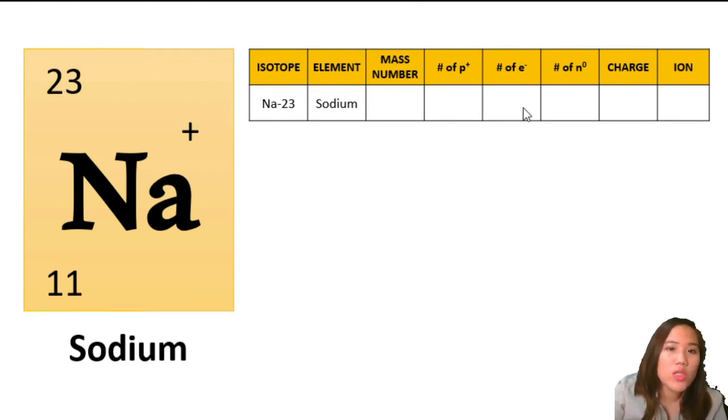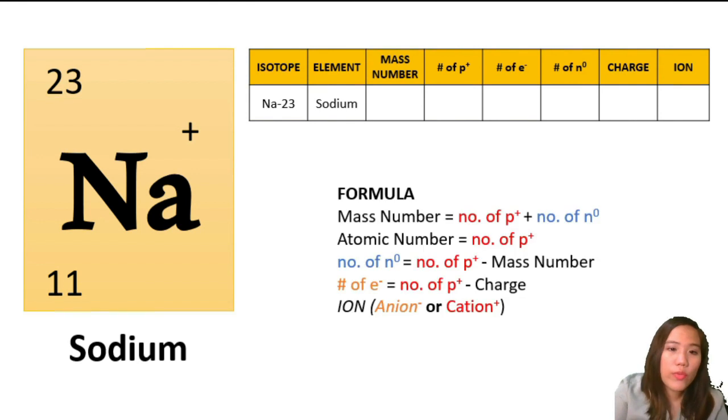For the mass number, you can just look at your periodic table, or if you have a given, just compute it as the sum of protons and neutrons. If you want to find the atomic number or the number of protons, just look at it on the periodic table, because protons and atomic number are just the same.